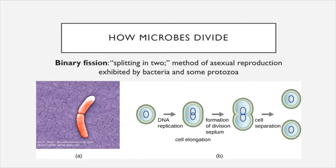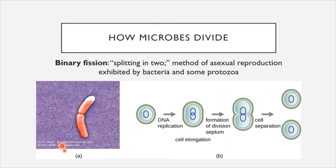What we see in this animation is a process called binary fission, which we've mentioned before as the main process by which bacteria divide. Binary fission literally means splitting in two — binary means two, fission means to split. This is an asexual mode of reproduction exhibited by bacteria and some types of protozoa. DNA is replicated, and once there are two copies of DNA in the same bacterial cell, a septum is created which pinches the cell membrane off, and the cell completely separates into two new identical cells. We can see in this microscopy image a bacillus undergoing division with septum formation visible in the middle.